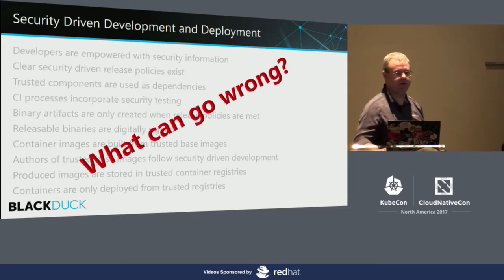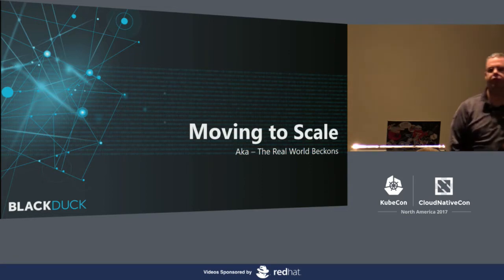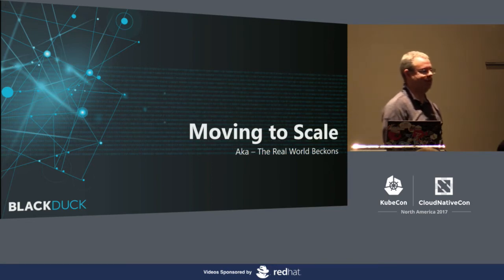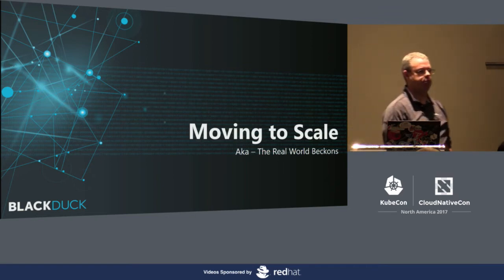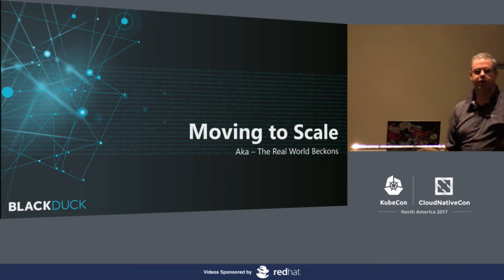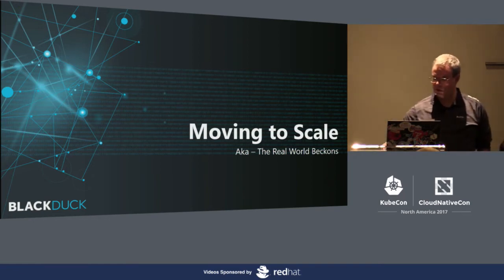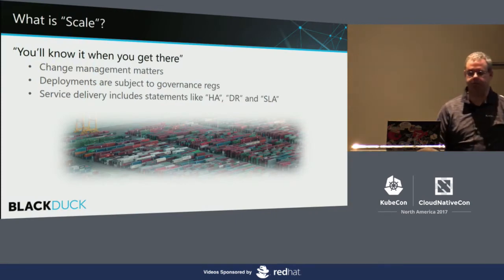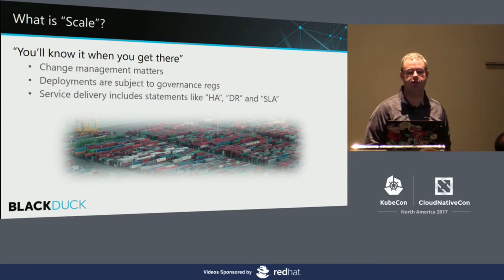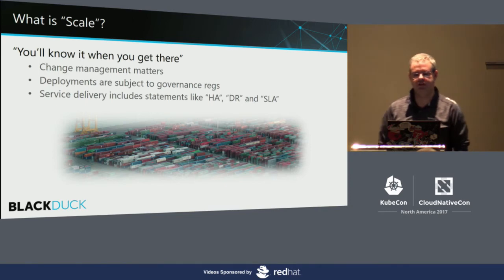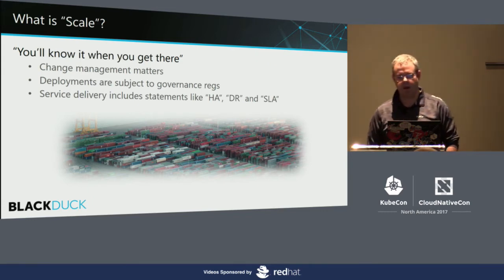What can possibly go wrong is a question of scale. My first customer for this — their definition of scale for acceptance testing was 40 nodes, changing images at a rate of about 100 a day. If your definition of scale is more than that, please raise your hand — it's about half the room. The problem is that everyone has a slightly different definition of scale. It really is one of those 'you know it when you get there' scenarios. Typically you've got some form of release management and config management in place, government regs, service delivery terms like high availability, disaster recovery, multiple data centers, and SLAs. That's scale. Proverbially, that's when it hit the fan.